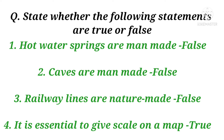State whether the following statements are true or false. Number 1: Hot water springs are man-made — False. Caves are man-made — False. Railway lines are nature-made — False. It is essential to give scale on a map — True.